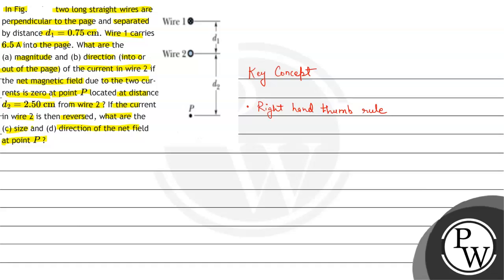The second key concept is that the magnetic field at a point at a distance d from a wire carrying current i is given by B equals mu-naught i upon 2 pi d, where d is the distance of the point from the current wire and i is the current in the wire. Keeping these two key concepts in mind, let us find the solution.